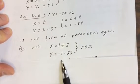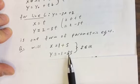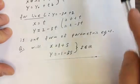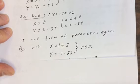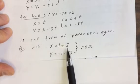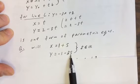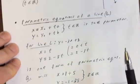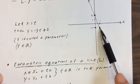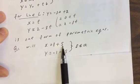To determine whether x equals 1 plus s and y equals negative 1 minus 3s represents the same line, we check if they share common points. If they have two points in common, they're the same line. Let s equal 0: then x equals 1 and y equals negative 1. Is (1, negative 1) a point on our line? Yes — it is. So when s equals 0, we get a point on the line.